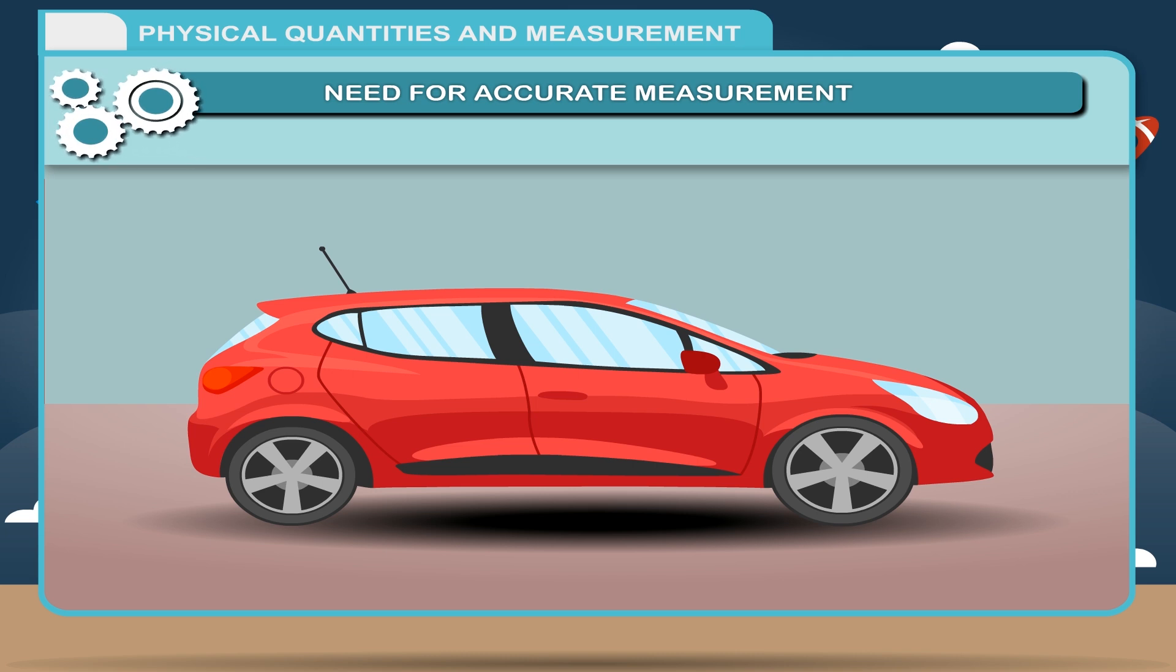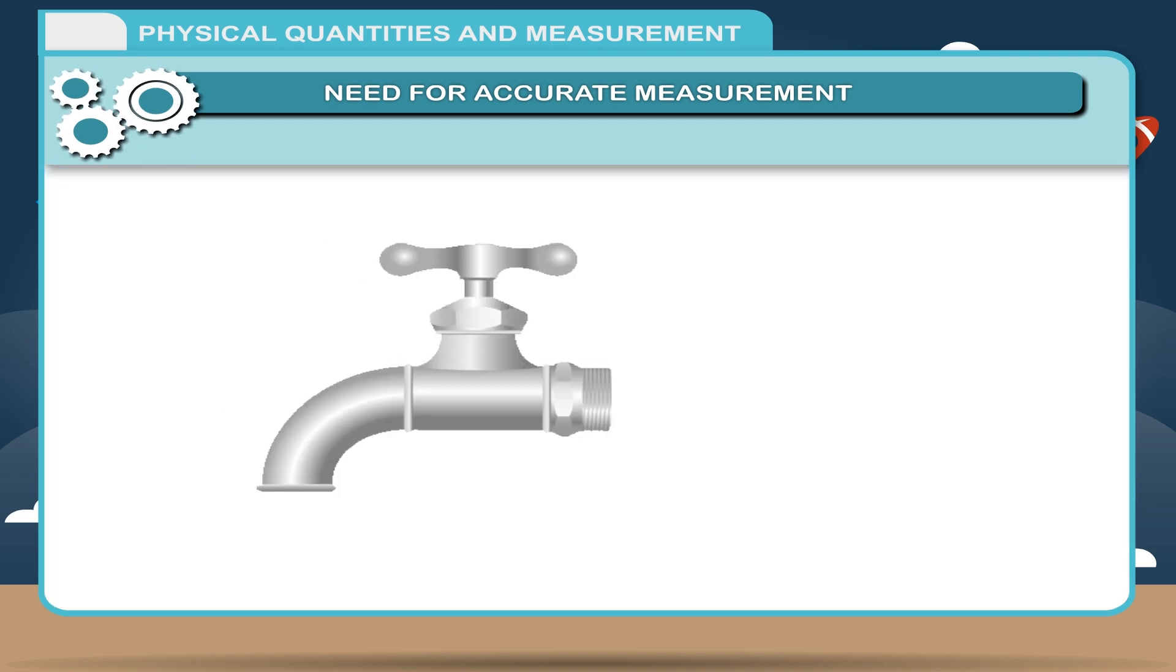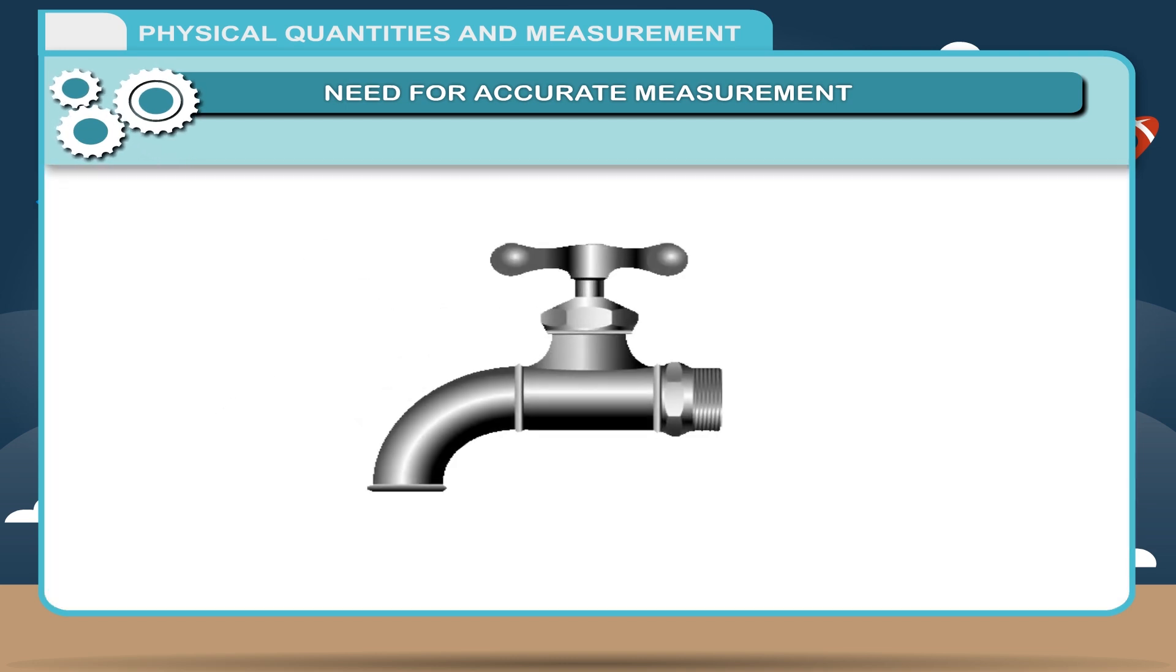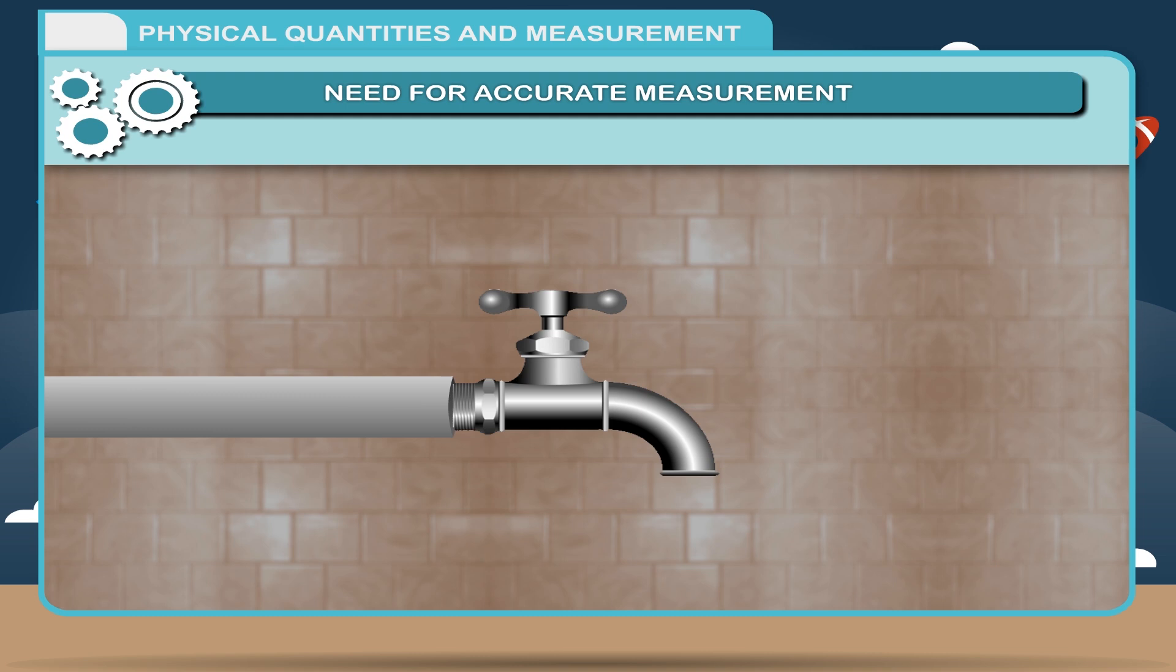To remove all such difficulties, measurements are controlled very accurately. The water tap you bring from the market fits into any pipe of its measurement. This could not have been possible without a control on the accuracy of measurements.